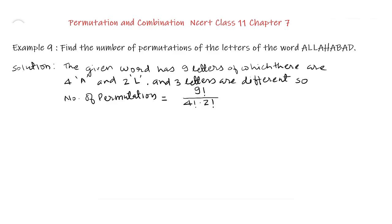Number of permutations equal to 9 factorial upon 4 factorial into 2 factorial.